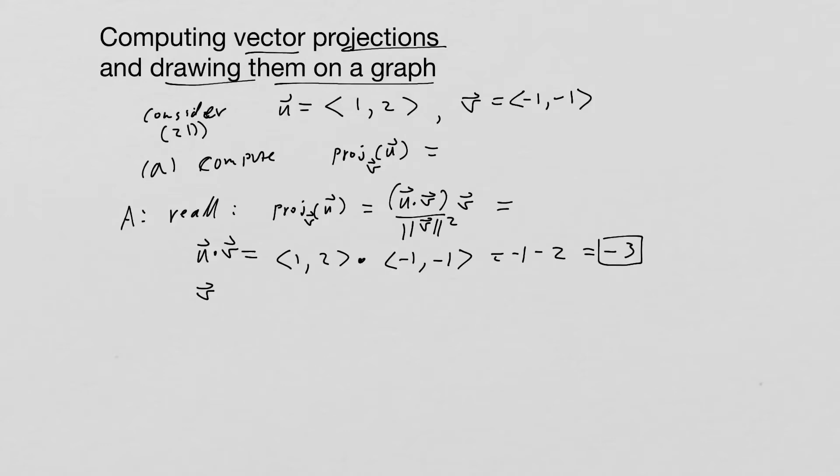Now we want to compute v in magnitude squared, which is actually just v dotted with v. So that's going to be <-1, -1> dotted with <-1, -1>, and we're going to get 1 plus 1 is equal to 2.